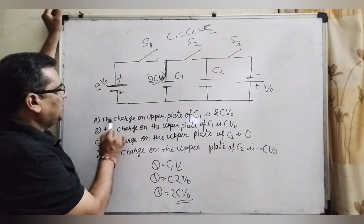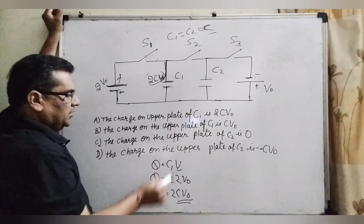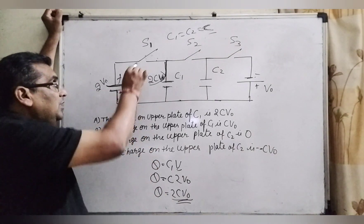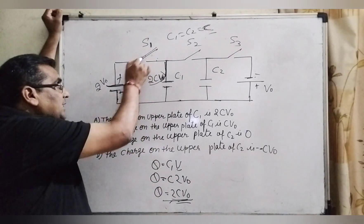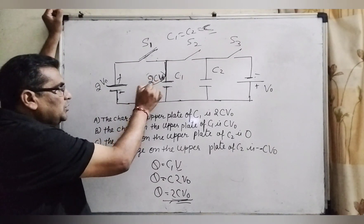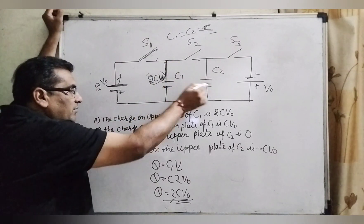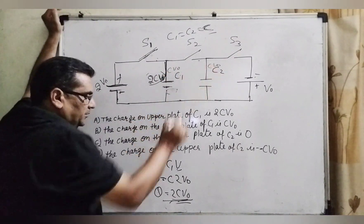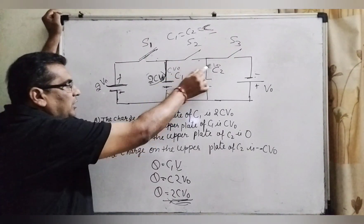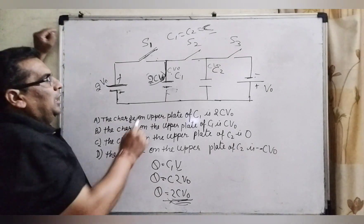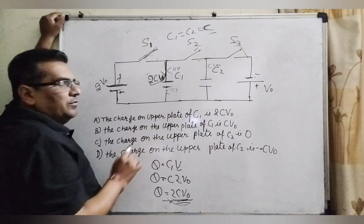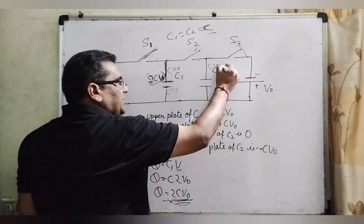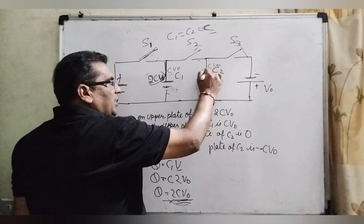At first glance, the charge on the upper plate of C1 is 2CV0. However, when S1 is opened and S2 is connected, C1 and C2 become parallel and charge is distributed equally — each becomes CV0. After some time, S3 is connected and S2 is released. In the first moment, C2 has CV0, but the polarity changes, and minus CV0 polarity gives a net result of 0.